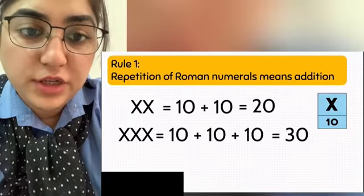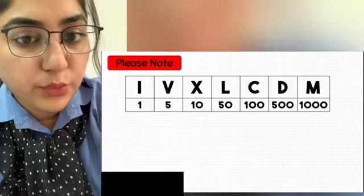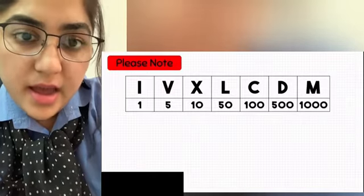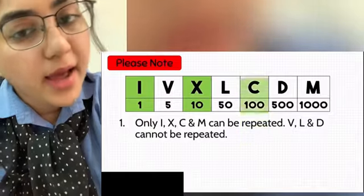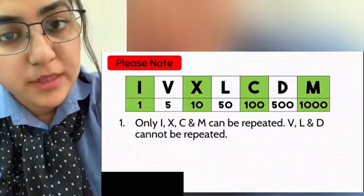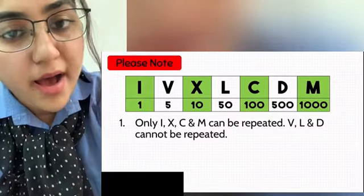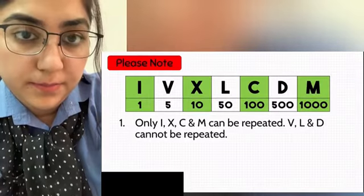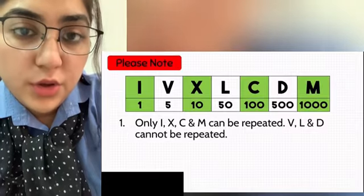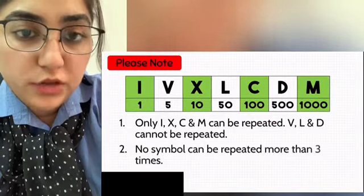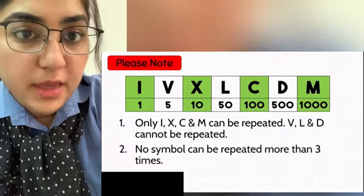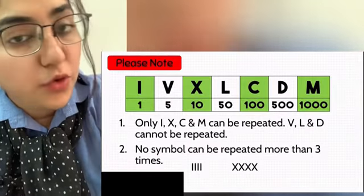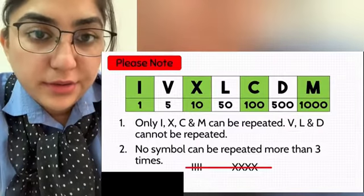Two points need to be considered while using rule 1. First, only I, X, C, and M can be repeated. V, L, and D cannot be repeated — meaning we cannot write VV, LL, or DD. Second, no symbol can be repeated more than 3 times. So we cannot write four I's or four X's in a row.